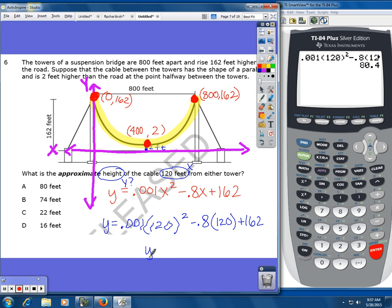So I get 80.4 feet, and it said approximate. So that would be A for 80.